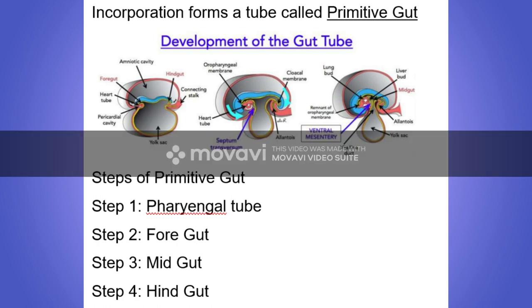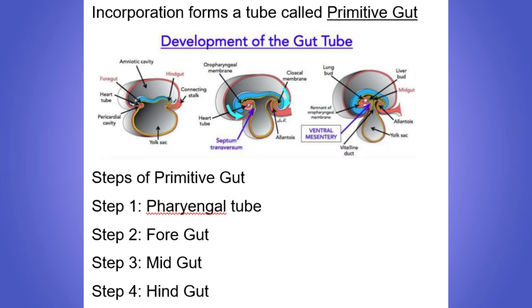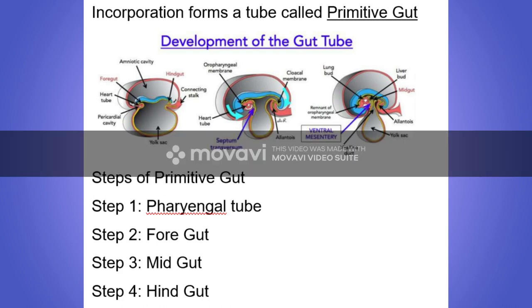From the cephalic end the foregut derives, from the caudal end the hindgut derives, and in the mid region the midgut derives. The steps of the primitive gut are basically four: the pharyngeal tube, foregut, midgut, and hindgut.